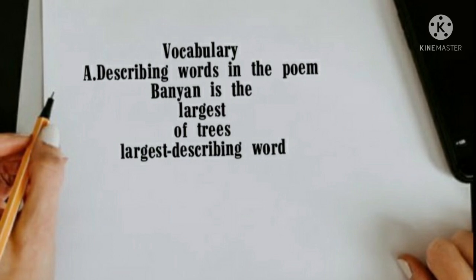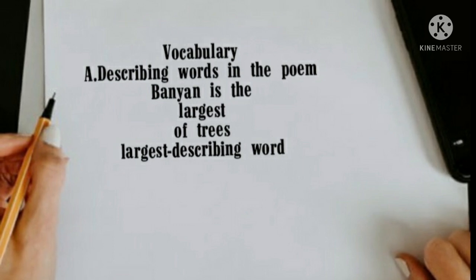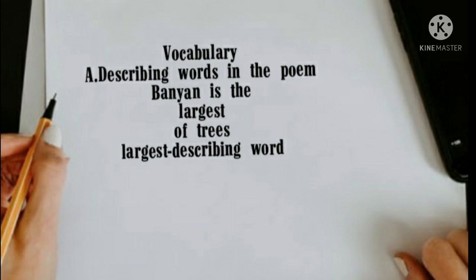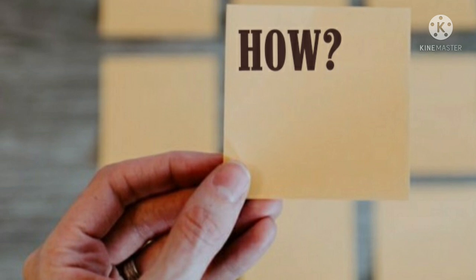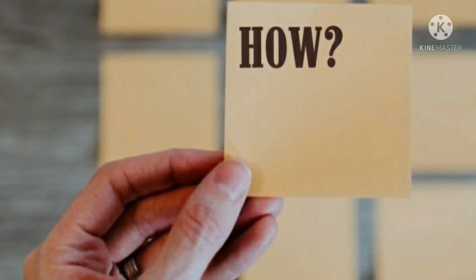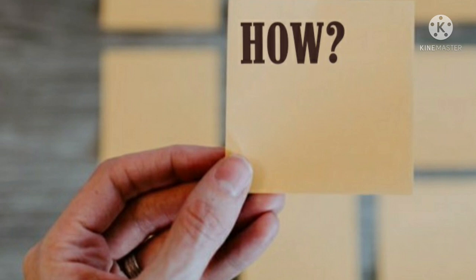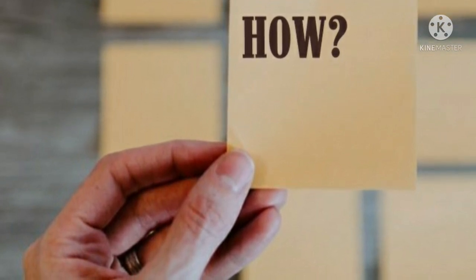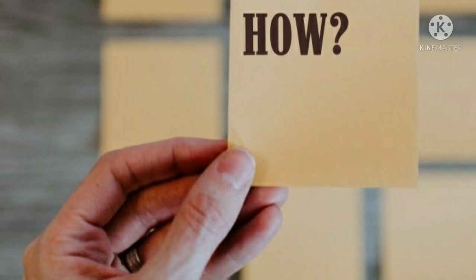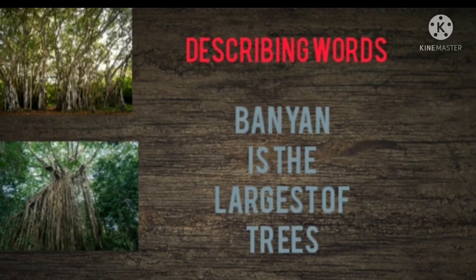First, you see how a noun is described. For example, 'Banyan is the largest of trees.' Here 'banyan' is the noun and 'largest' describes it. That is how describing words work. We will now find out how to identify describing words. Look at page number 125 to find your answers.